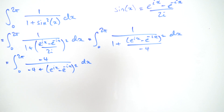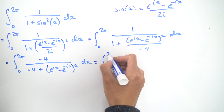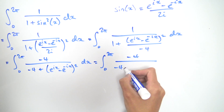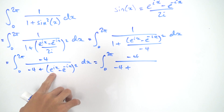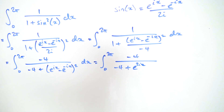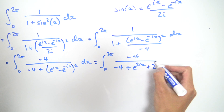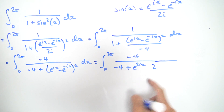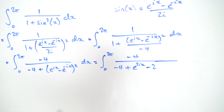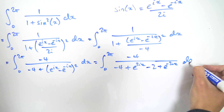We've simplified things quite a bit, and now I want to expand out this binomial term using the binomial theorem. So that's the integral from 0 to 2π of minus 4 divided by minus 4 plus: first term squared gives e to the 2ix, then two times the first times the second gives minus 2, and the last term e to the minus ix squared gives e to the minus 2ix, all integrated with respect to x.